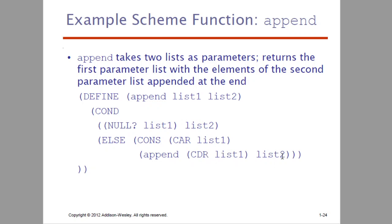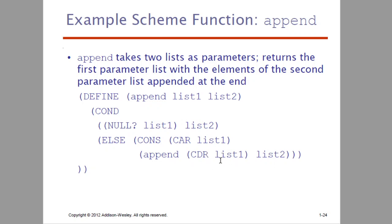Next we have let. The let operation is a shorthand for a lambda expression. We covered lambda in the previous class. Here we have a multiplication operation with parameter alpha equals 7, then a multiplication operation of 5 and alpha. This is the same as the lambda expression: lambda alpha, star 5, alpha, applied to 7.